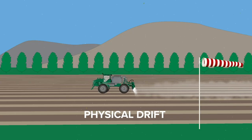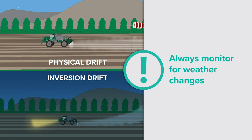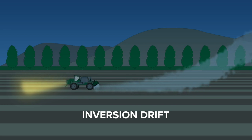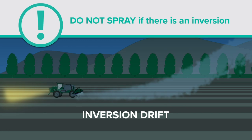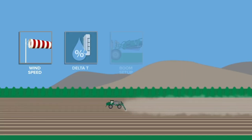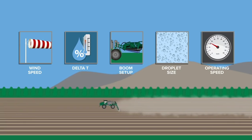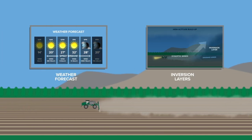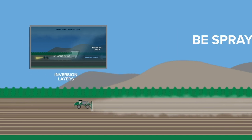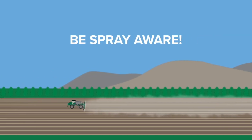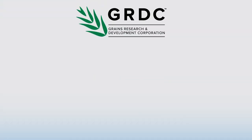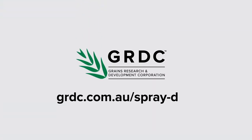It's important to monitor for changes in weather conditions that can lead to both physical and inversion drift. If there is an inversion or you're not sure if one exists, you should not spray. Implementing best spray management practices on farms is in your hands, but the benefits will be passed on to you and your neighbours. Be spray aware. More information on reducing spray drift risks can be found at grdc.com.au.